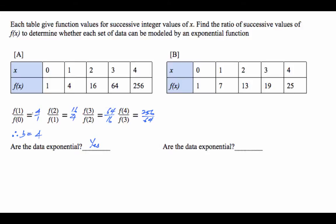Let's look at table B. Doing the same setup, 7 divided by 1, is that equal to 13 divided by 7? No. So you could have stopped at the first two, as long as they're not equal to each other. As long as it's not a geometric sequence, it's not exponential function. So is the other data exponential? The answer is obviously no.